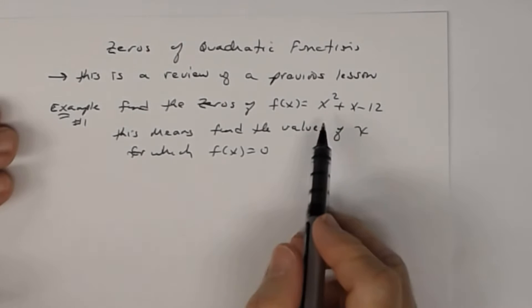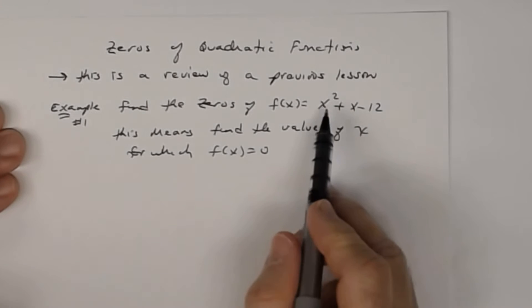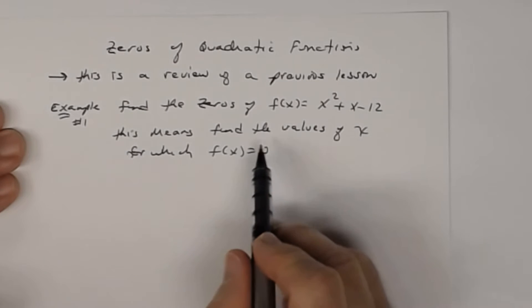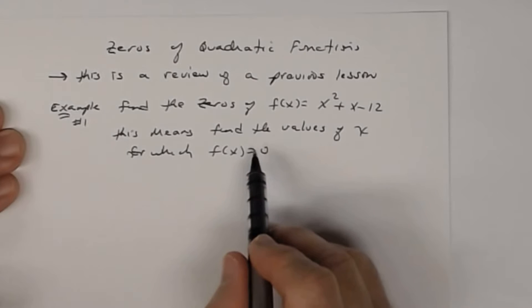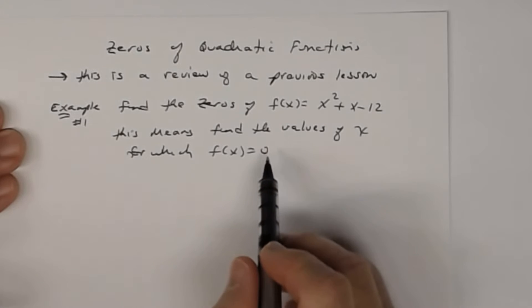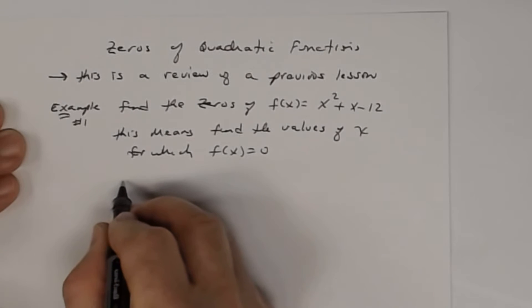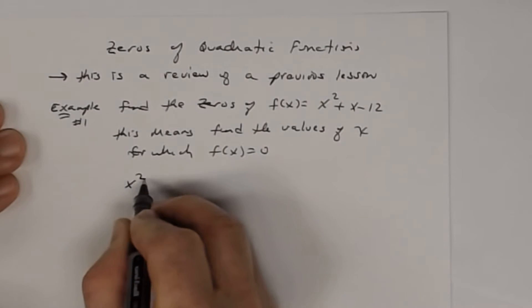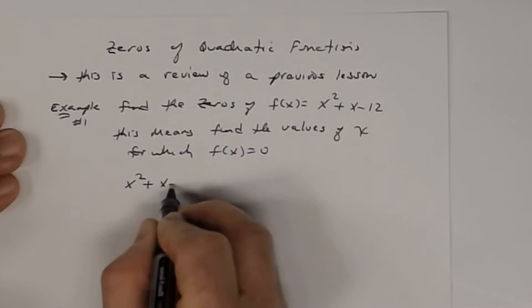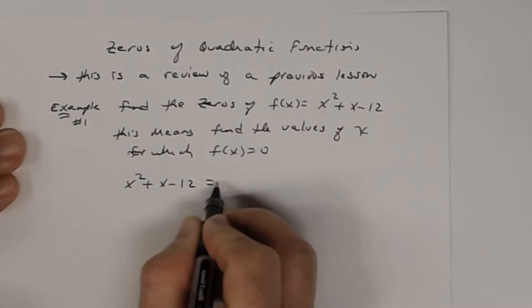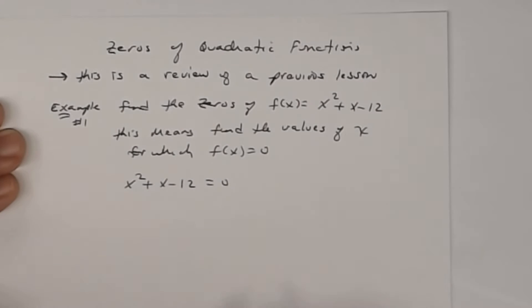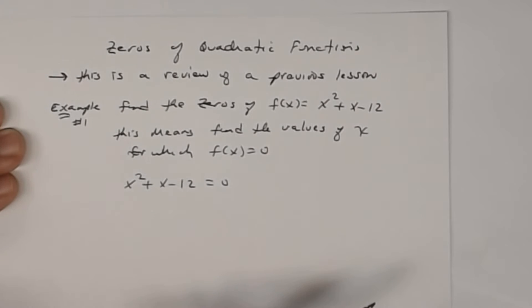So if you set this function equal to zero, you get x squared plus x minus 12 is equal to zero. And then you just solve this quadratic equation.